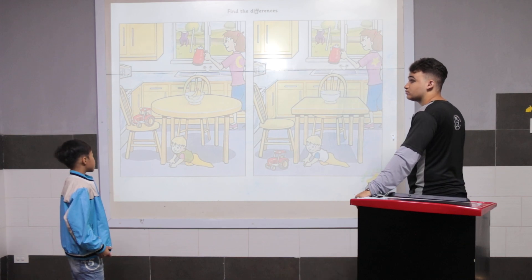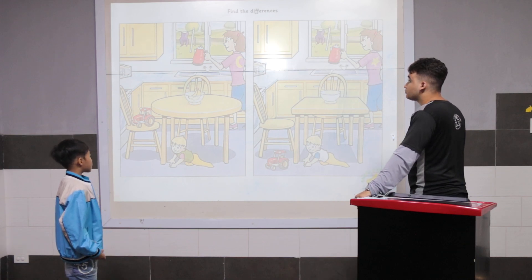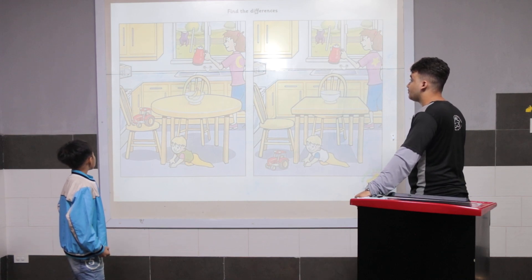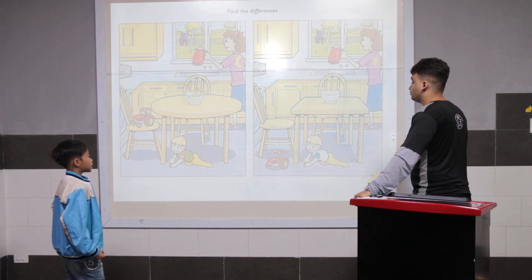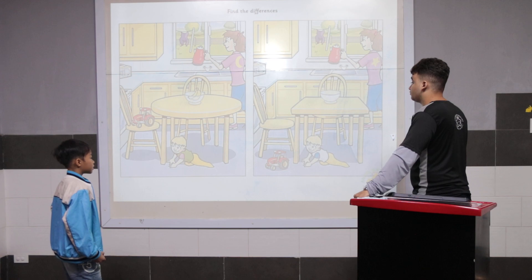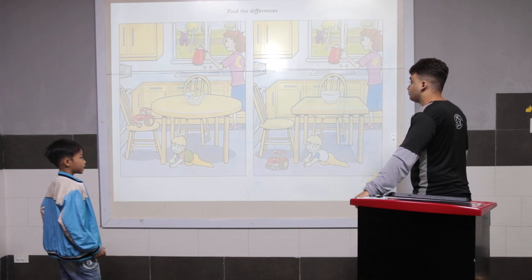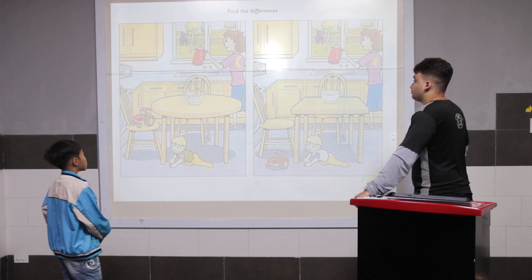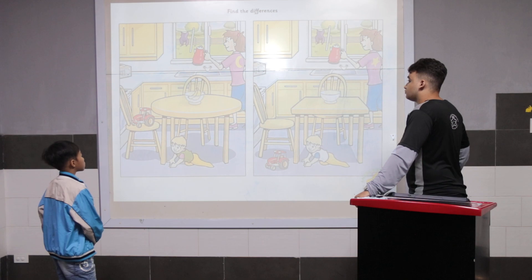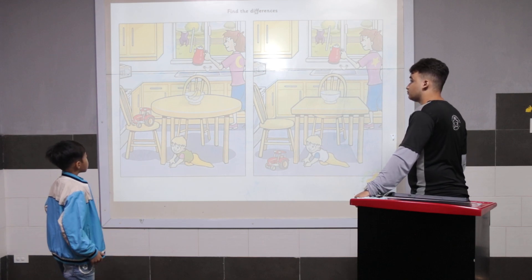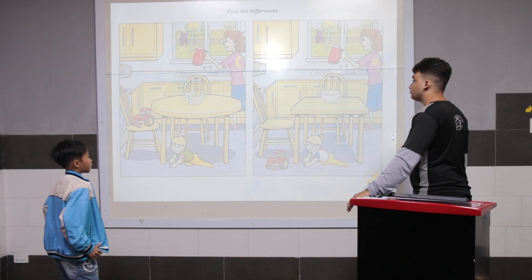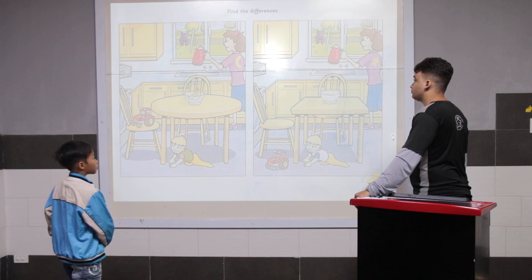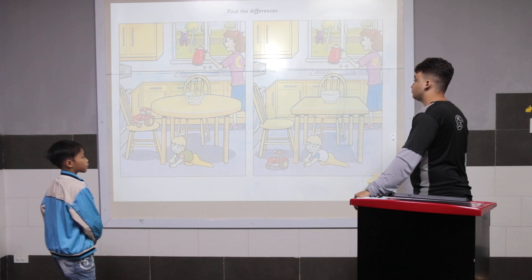Picture one: the car on the chair. Picture two: the car on the chair. Picture one: the table is circle. Picture two: the table is square.